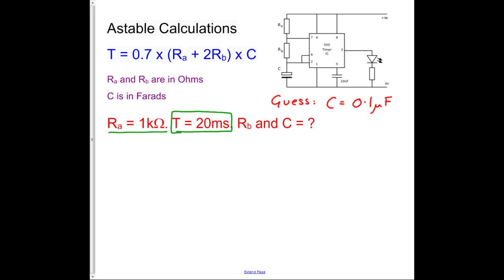And now we can do exactly the same to find RB as we just did a moment ago. So I'm going to write down, I'm going to take a shortcut and start halfway through, T divided by 0.7 times C equals RA plus 2RB. So that's just the equation written in a slightly different form.